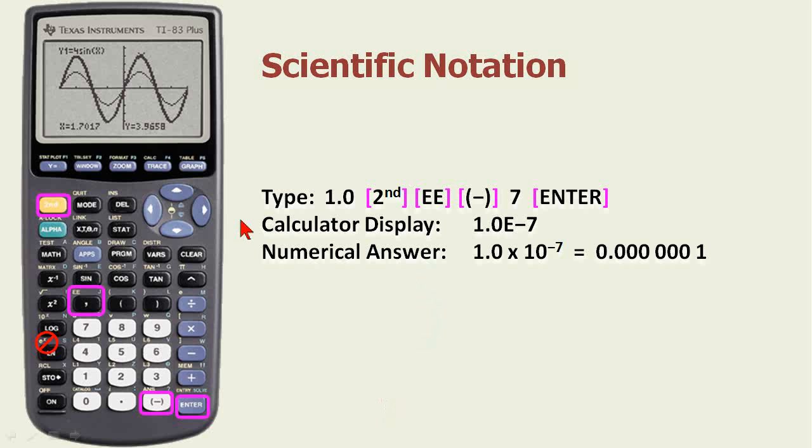Let's take a look at a calculation on your calculator. We already know how to do scientific notation. If you're using the calculator recommended for this course, here are the numbers that you would press. You would ignore this e to the x button, and you get this display which is 1.0 e to the minus 7.